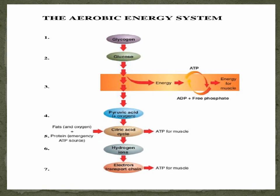This is an example of the aerobic energy system diagram. First, we have glycogen and glucose. It involves ATP, ADP plus free phosphate, and energy. The fourth step involves pyruvic acid plus oxygen, as well as fats and oxygen. The fifth involves protein as an emergency ATP source, or the citric acid cycle, producing ATP. Sixth, we have hydrogen ions. And seventh, we have the electron transport chain, also producing ATP.